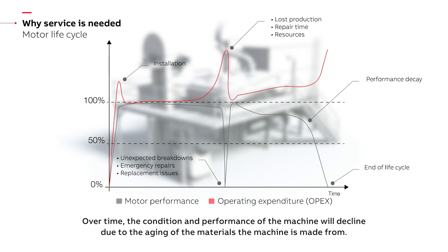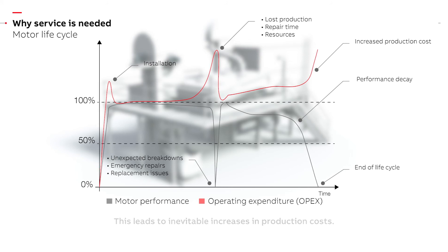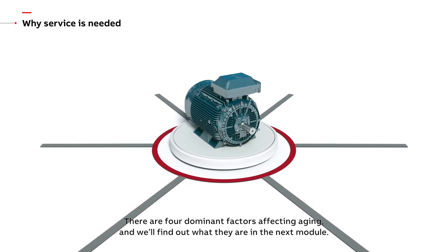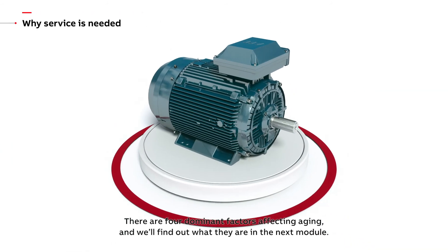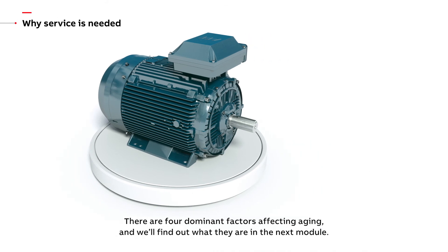Over time the condition and performance of the machine will decline due to the aging of the materials the machine is made from. This leads to inevitable increases in production costs. There are four dominant factors affecting aging and we will find out what they are in the next module.